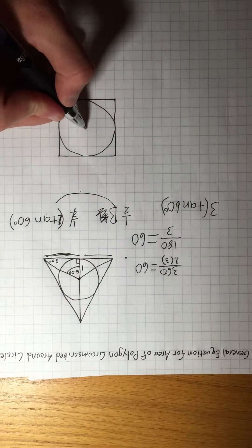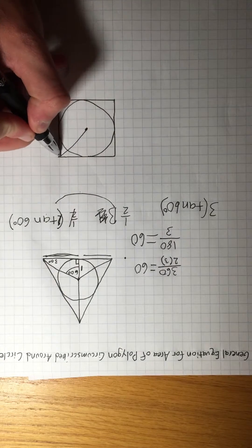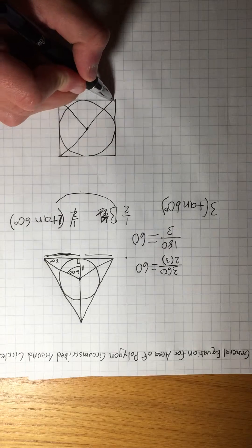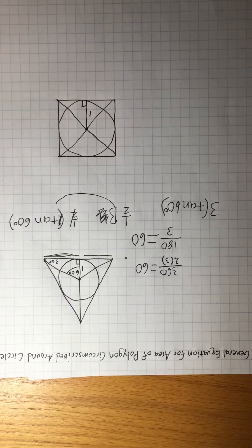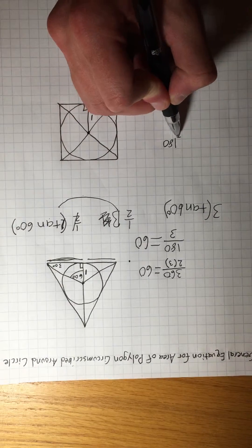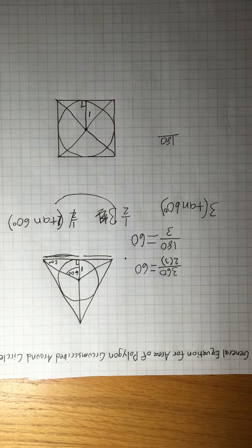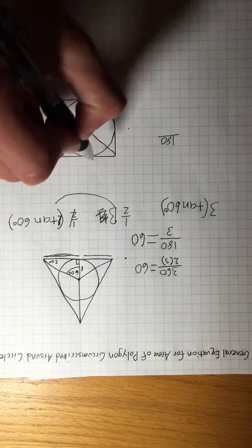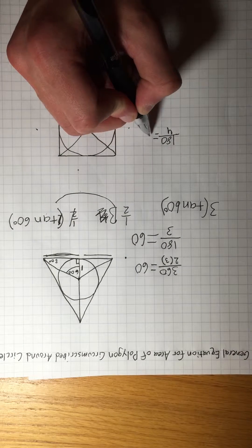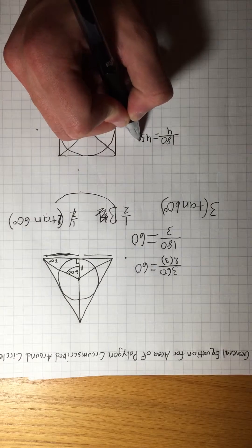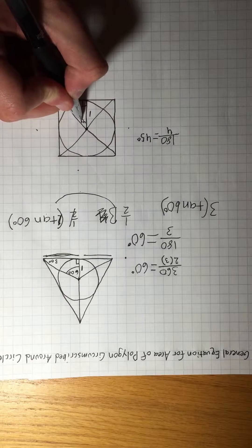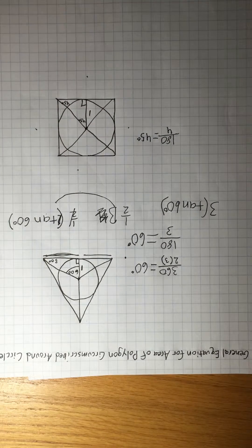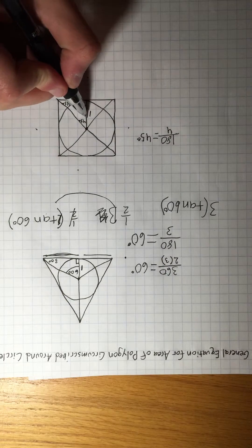For the square, you draw your segments from the center to the vertices and drop a height of 1. You do 180 divided by N, where N equals 4 sides: 180 over 4 is 45 degrees. So this half-angle is 45 degrees. Again, you might think to use special right triangle relationships, but it's better to use trig.